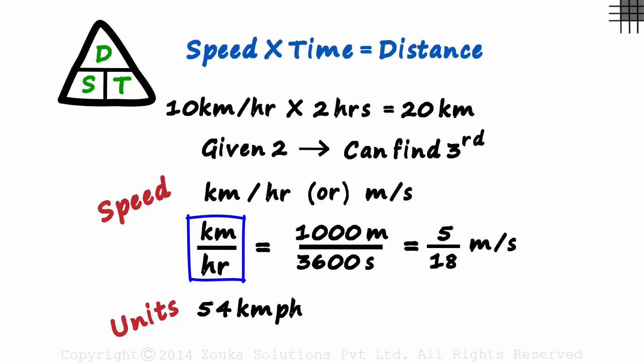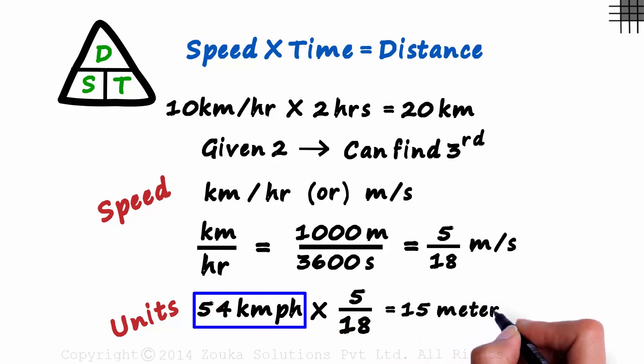As 1 kilometer per hour is the same as 5 over 18 meters per second, we multiply this by 5 over 18 to get the answer in meters per second. 18 times 3 is 54 and 3 times 5 is 15. So 54 kilometers per hour is equal to 15 meters per second.